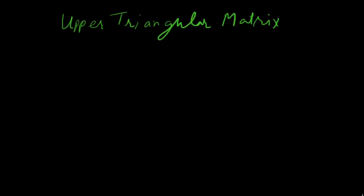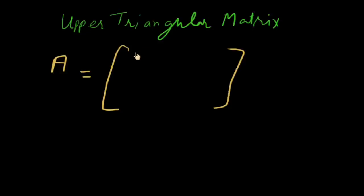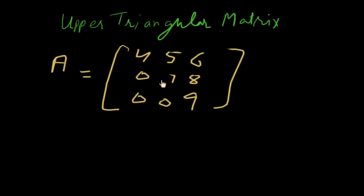If any matrix makes a triangle of numbers on the right side, then it will be an upper triangular matrix. For example, matrix A is an upper triangular matrix because its numbers — 4, 5, 6, 7, 8, and 9 — along with zeros, form that pattern.